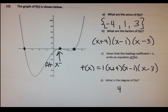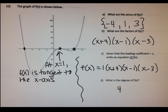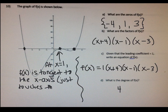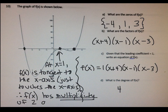At x equals one, f of x is tangent — you may remember that term from geometry — to the x-axis, which means it doesn't actually go through it, it just touches it. It just touches the x-axis and then bounces right back off. Therefore — that little symbol with three dots in a triangle — f of x has multiplicity of two at x equals one.